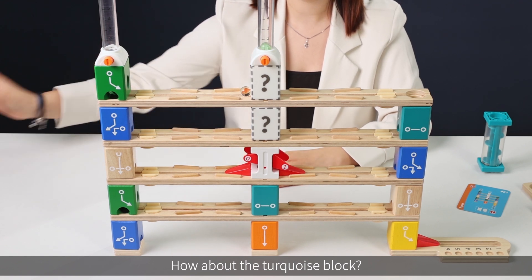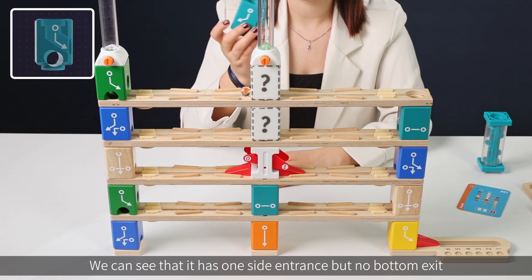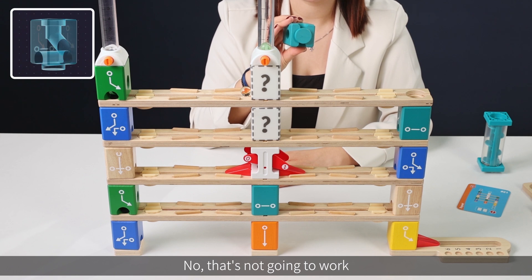How about the turquoise block? We can see that it has one side entrance but no bottom exit. Nah, that's not going to work.